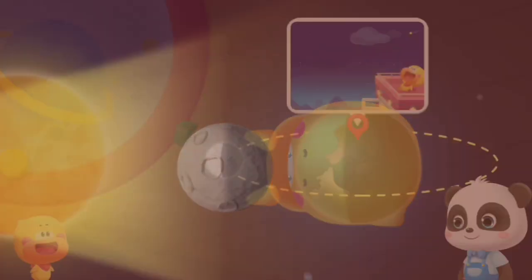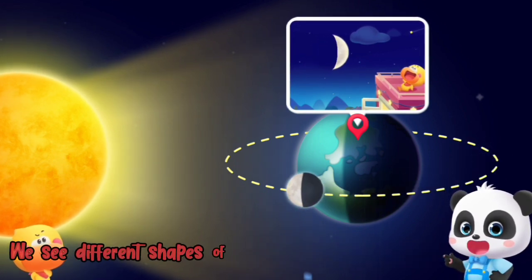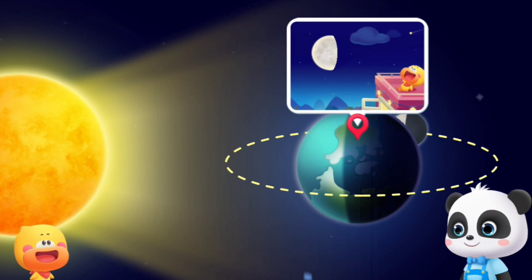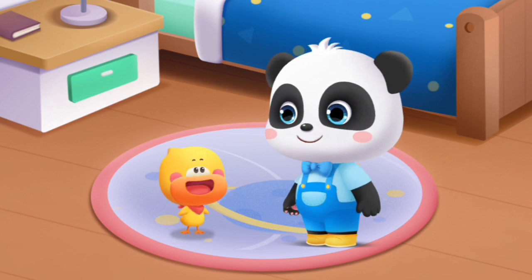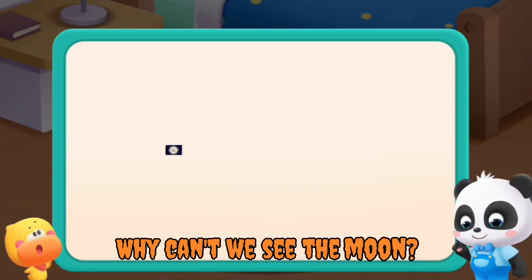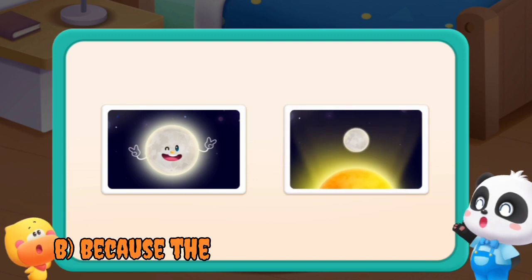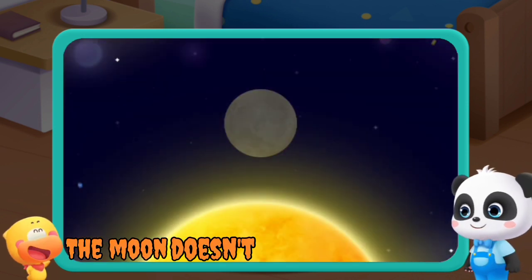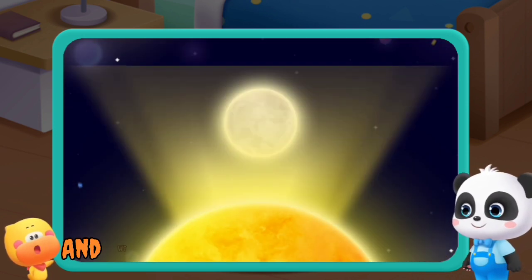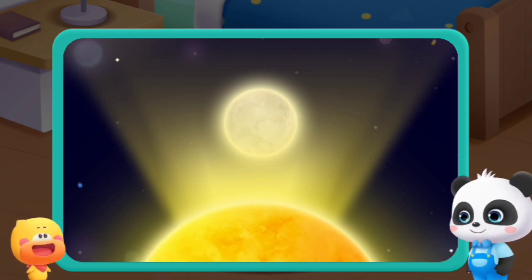That's right. The moon moves around the earth. We see different shapes of the moon depending on its position. I finally got it! Let me test you. Why can we see the moon? A: Because the moon shines on its own. B: Because the moon reflects sunlight. Correct answer — the moon doesn't have its own light, and we can only see it when sunlight shines on it.